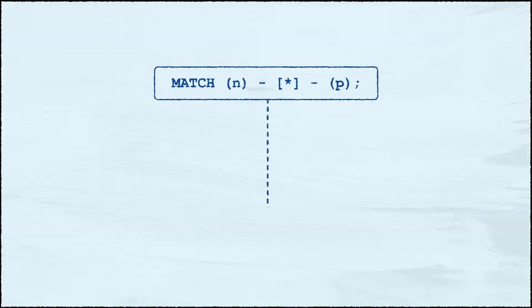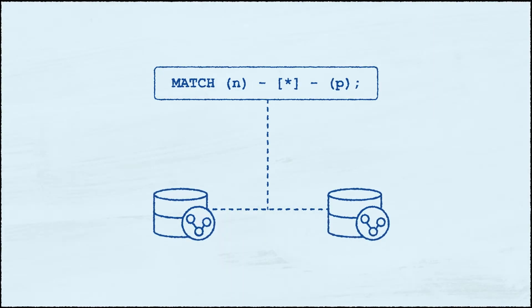But we can do more than write more expensive queries. In Neo4j 4.0 we introduced Fabric, an addition to Cypher that allows for querying multiple Neo4j databases at the same time with a single query.